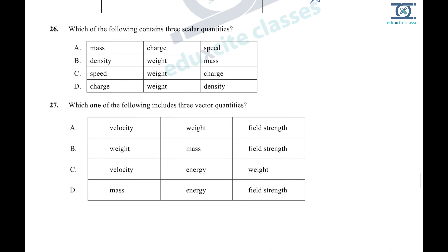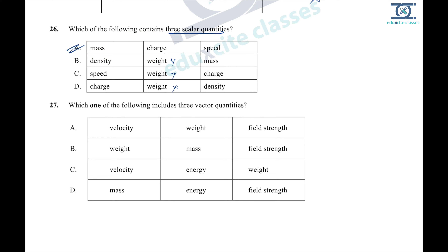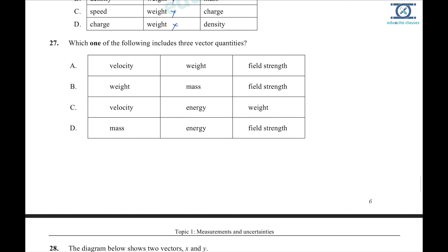Question 26: which of the following are three scalar quantities? Mass, charge, and speed are all scalar quantities. Question 27: which are three vector quantities? Mass is not a vector, energy is not a vector. Velocity, weight, and electric/gravitational field strength are all vector quantities — option A.